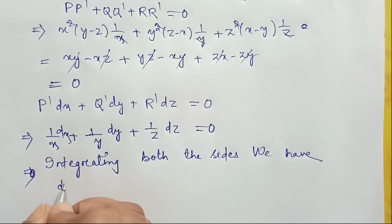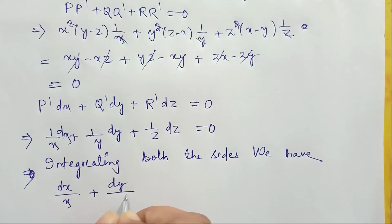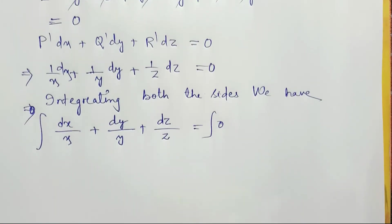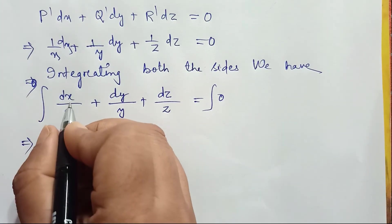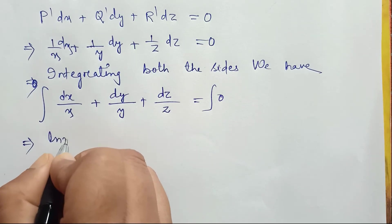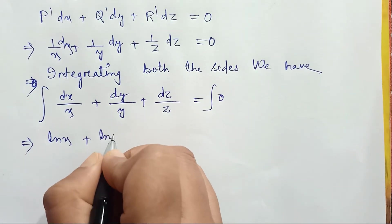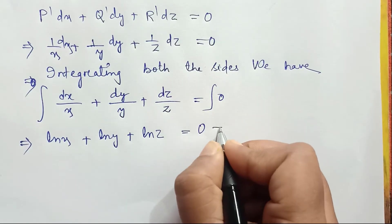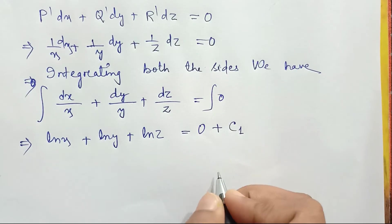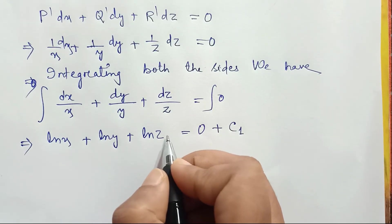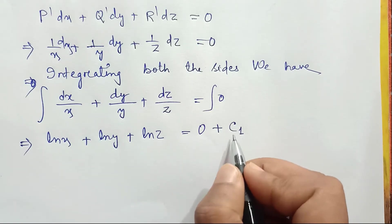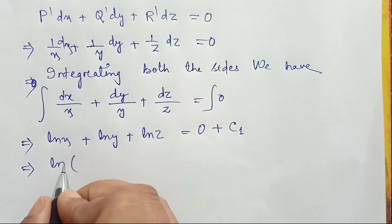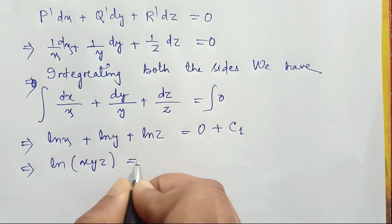Integrating both sides: ∫dx/x + ∫dy/y + ∫dz/z = 0, giving ln x + ln y + ln z = c₁. Using the logarithm property ln a + ln b + ln c = ln(abc), this becomes ln(xyz) = c₁.